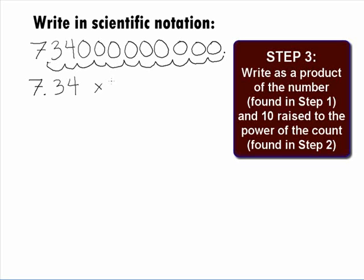In Step 3, we need to put this together and write it as a product of the number found in Step 1 and 10 raised to the power of the count found in Step 2. This gives us 7.34 times 10 to the 11th power.